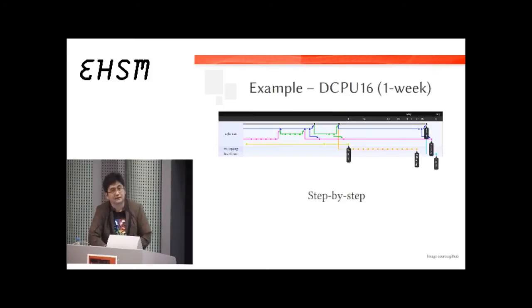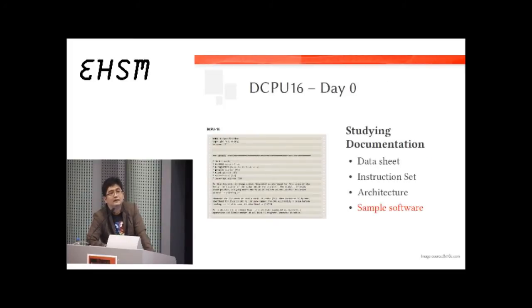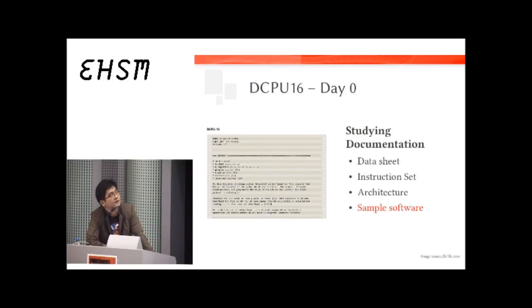Now I'm going to talk about the actual example of designing the DCPU-16 within a week, and take you through step by step how you actually do it. The first step, day zero, is studying documentation. For a lot of engineers, this is something we don't like — reading data sheets and stuff. But it's very critical. If you want to design a microprocessor, especially if you're cloning an existing one or making one binary compatible, you've got to totally understand it.